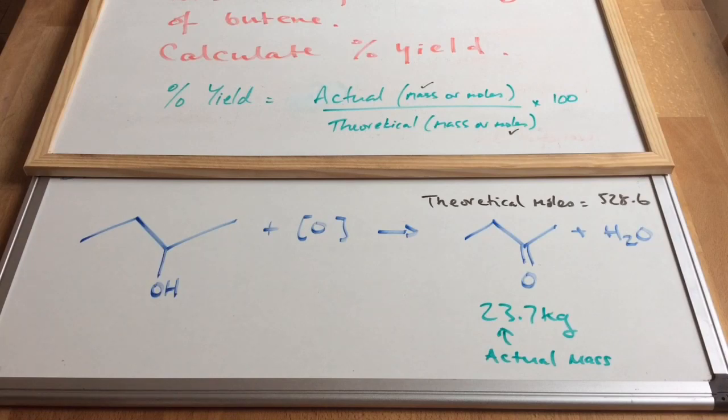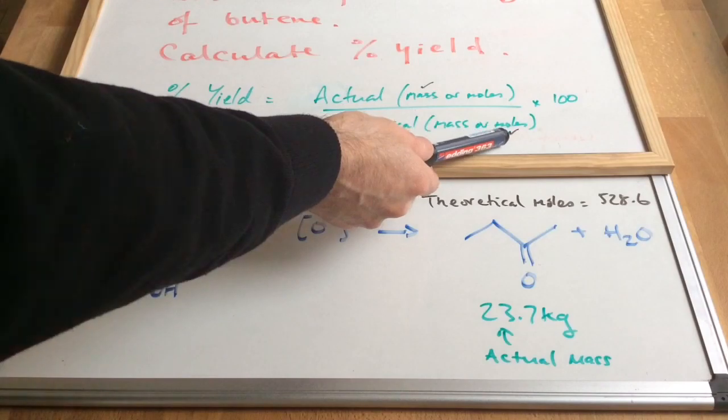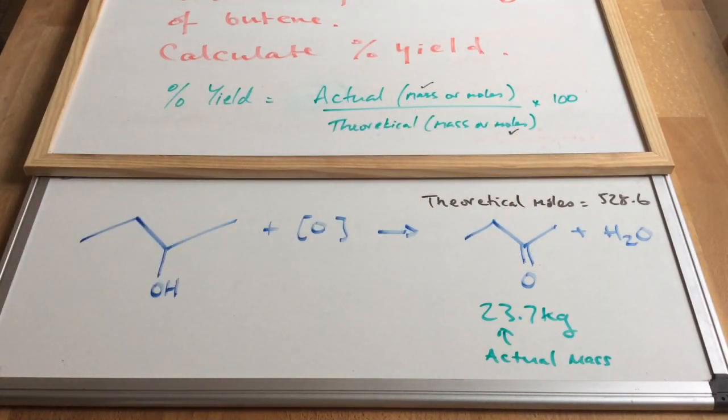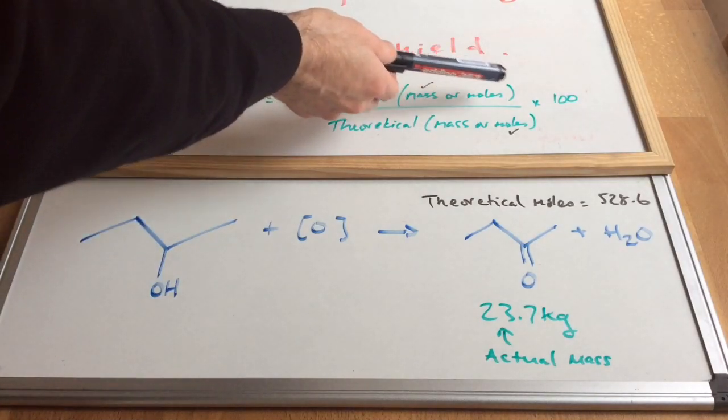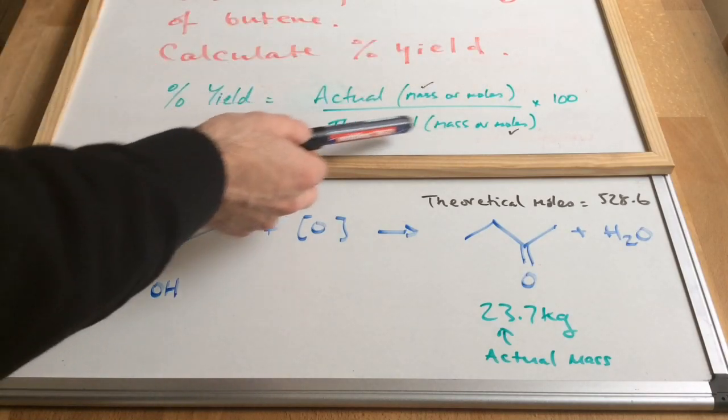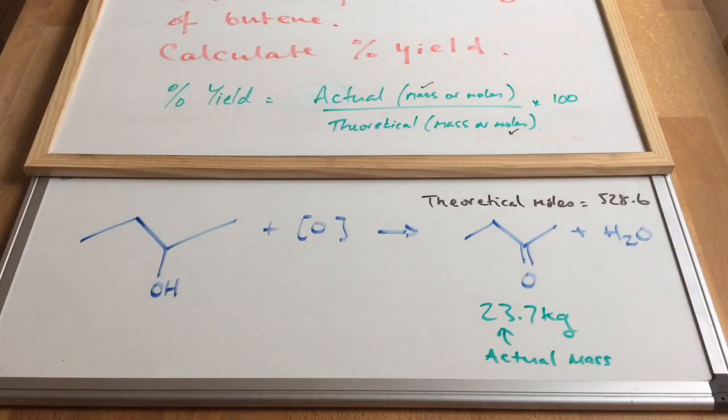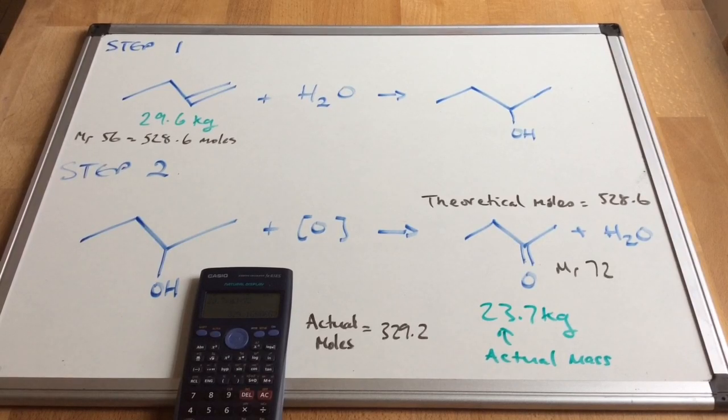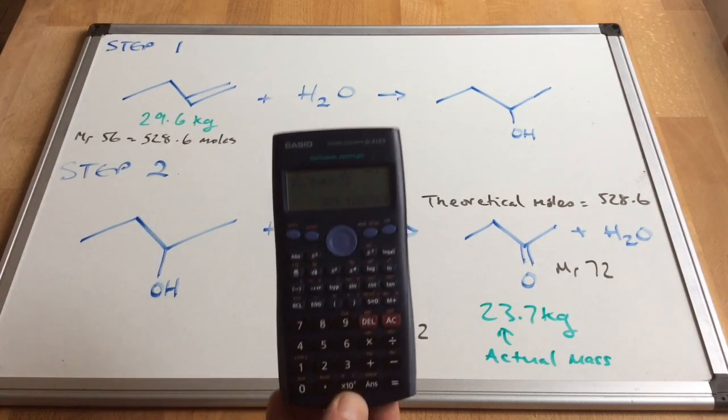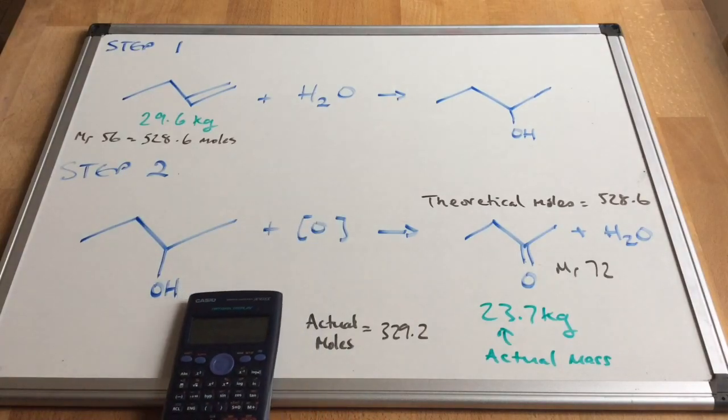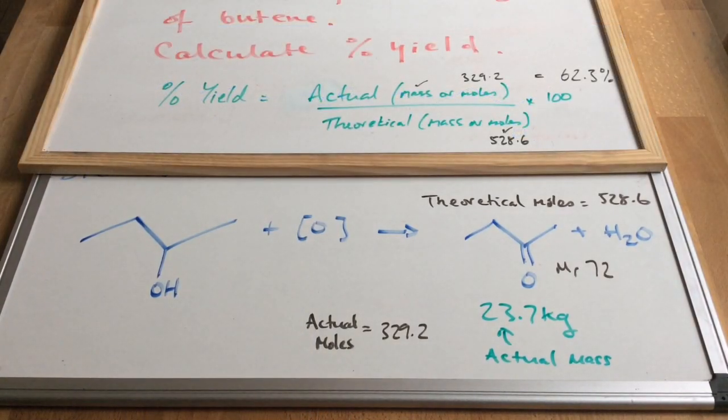So I've brought the formula back for the calculation of percentage yield. We've actually got the actual mass produced, so that's this 23.7 kilos, and we've just established that the theoretical moles is 528.6. So we've got a choice: we can either work out the actual moles and then we've got both the numbers we need, or we can work out the theoretical mass. Well I'm going to do both to compare with your answer. So if we start with the actual moles, all I've done is I've taken the actual mass 23.7 kilos, turned that into grams - so that's 23.7 times 10 to the 3 grams - and I've divided it by the MR of butanone which is 72, and that gives me an actual moles of 329.2. There's the calculator value there and you can see on the top board there, to one decimal place we're getting a percentage yield using the moles of 62.3 percent.